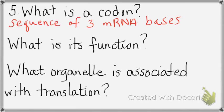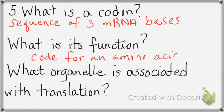What is the function of a codon? Each codon codes for an amino acid. When the cell is using the messenger RNA to do amino acid sequencing — using mRNA to make an amino acid sequence — that process is translation. The organelle in a cell associated with translation is the ribosome — the protein kitchen.